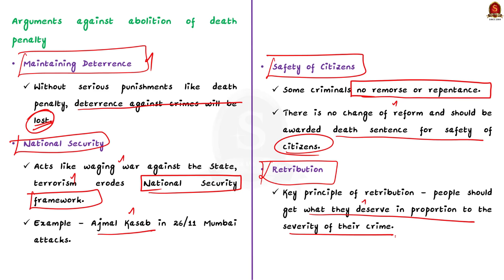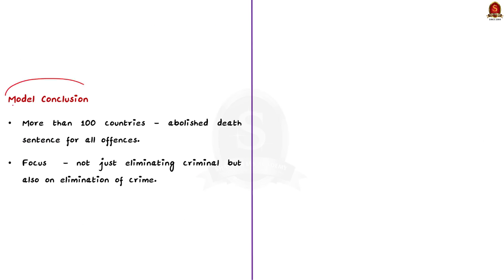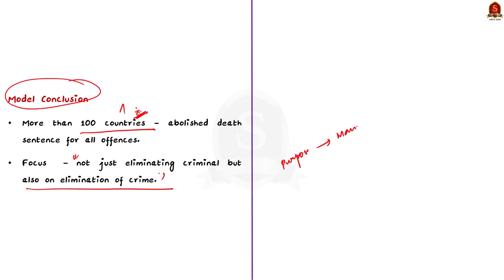This is all about the body part. Now for the conclusion: more than 100 countries have abolished the death sentence for all offences, including most European countries, Australia, and New Zealand. The focus of deterrence should not be on eliminating the criminal but on the elimination of crime. The purpose of punishment in criminal law, from a broader perspective, is to achieve an orderly society, ensure restoration of peace, and prevent further crimes by balancing the competing rights of the criminal and the victim. Feel free to write your alternative conclusion or post your views on the death penalty in India in the comment section.